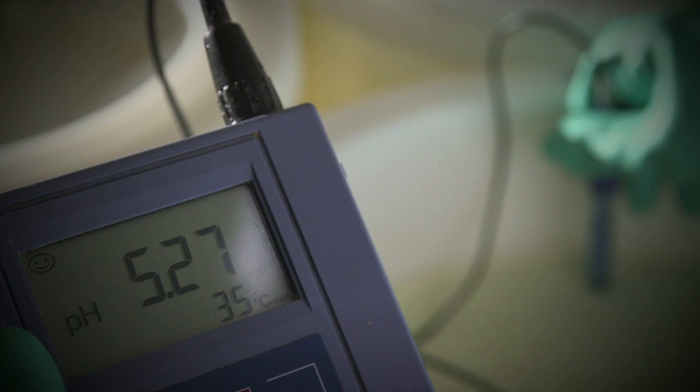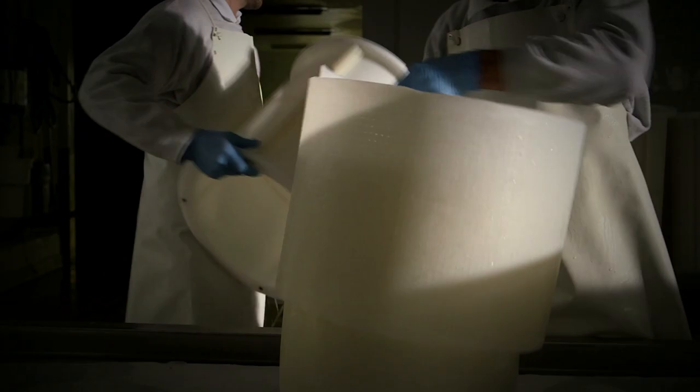A pH test verifies the correct amount of acidity. Then the whole cheeses are transferred to the alimentary resin cylinders. The operator deals with the paring down process, with excess cheese paste being carefully removed.